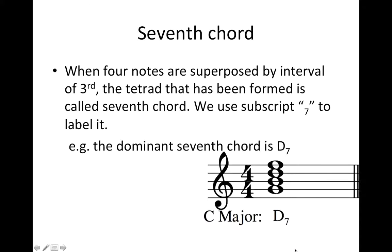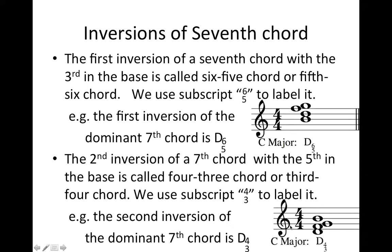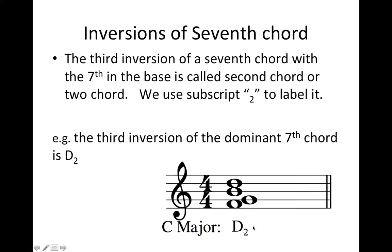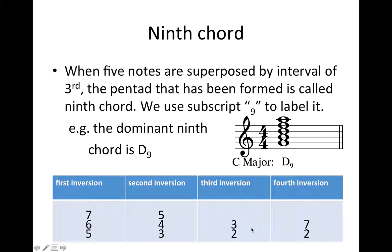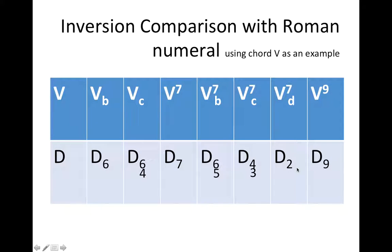For a 7th chord, we write the number 7 next to it. The first inversion of a 7th chord uses 6/5, the second inversion uses 4/3, and the third inversion uses 2. For a 9th chord, we use 9. Comparing this to Roman numeral analysis: in Roman numeral analysis you put 7 and 9 at the top right corner, but in this system we put them at the bottom right — like this 7 and 9 — because we have other uses for the top right corner.